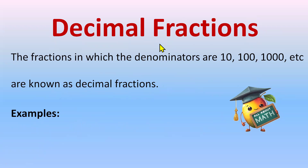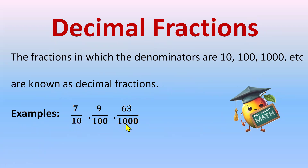For example, 7 by 10 — the denominator is 10, so it's a decimal fraction. 9 by 100 — denominator is 100, decimal fraction. 63 by 1000 — denominator is 1000, it's a decimal fraction. 17 by 10,000 is also a decimal fraction because in all these fractions, you can see they have 10, 100, 1000 or 10,000 in the denominator.